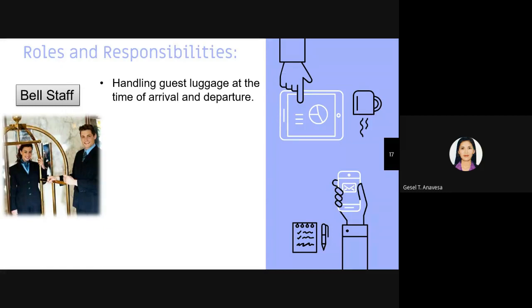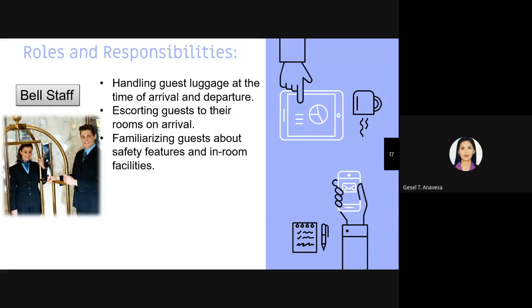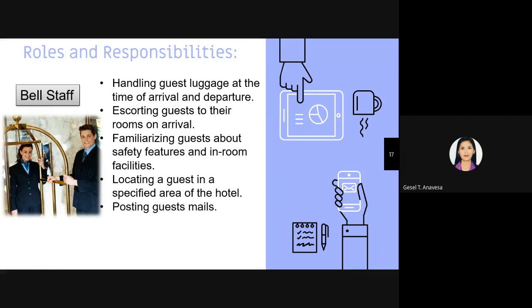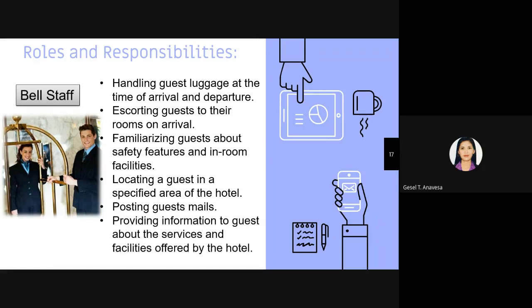Bell staff are responsible for handling guest luggage at the time of arrival and departure, escorting guests to their rooms on arrival, familiarizing guests with safety features and in-room facilities, locating guests in a specified area of the hotel, posting guest mail, and providing information about the services and facilities offered by the hotel. In some hotels, there may not be a separate bell staff role, and the concierge performs similar duties.